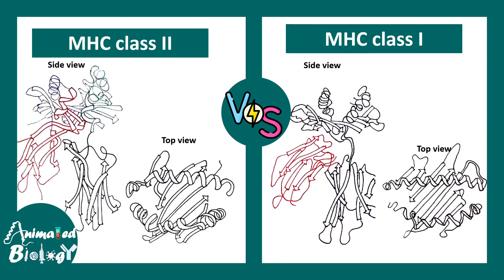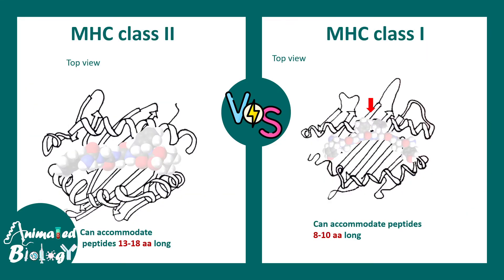The structural differences of class 1 and class 2 MHC can be understood if we look at them from a top view — their peptide binding grooves are quite different. Class 2 MHC can accommodate bigger peptides ranging from 13 to 18 amino acids long, whereas class 1 MHC can only accommodate 8 to 10 amino acid long peptides due to the constraint in the MHC binding groove.